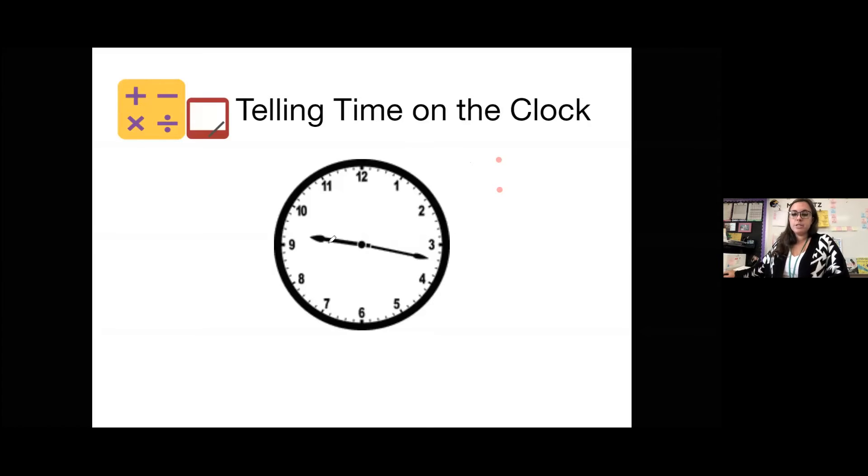So we look at the short hand first. That's our hour hand. Our hour hand is between the nine and the 10. So the hour is still nine. It's not reached 10 o'clock yet. Then we look at our long minute hand. And I have to switch my thinking. First, I count by fives. Five, 10, 15, 20, if I say 20, that's too far. So now I'm gonna count by ones. I'm at 15, 16, 17. So nine, 17.